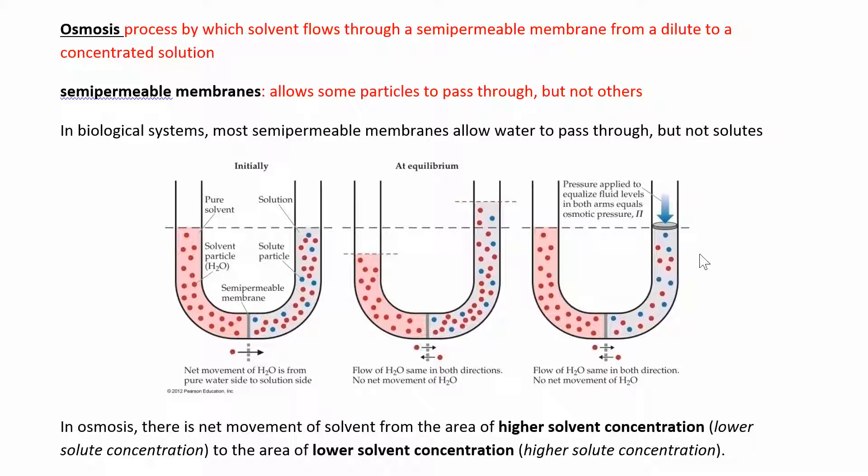A semi-permeable membrane allows some things to go through but not everything. In these systems, you can see solvent on one side and solution with blue solute particles on the other. Water will flow from where there's more water to where there's less water, so the solvent flows into the solution.